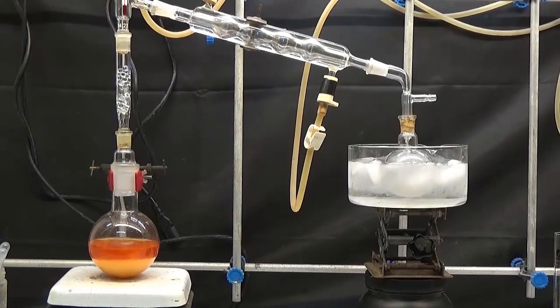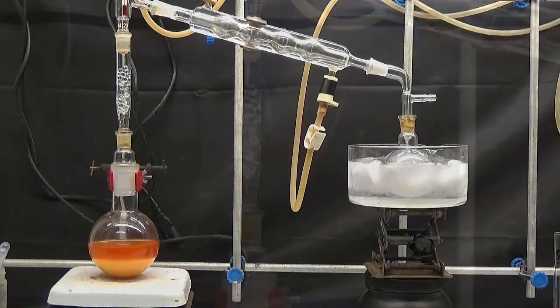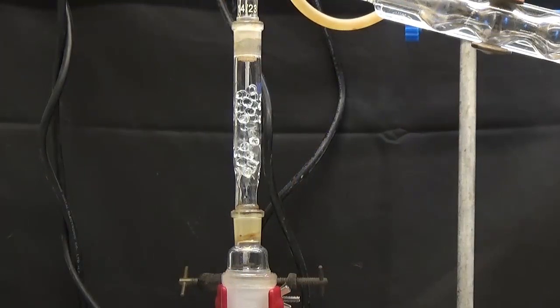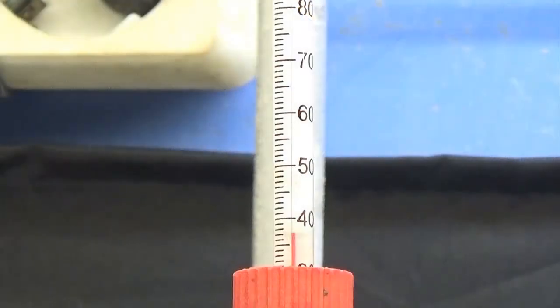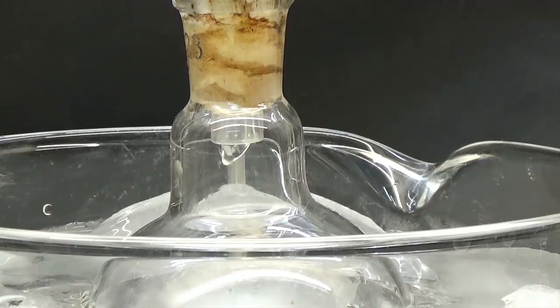We install distillation equipment with a rectification column. Ethyl bromide boils at 38 degrees. We heat the mixture to a distillation temperature between 35 and 40 degrees.